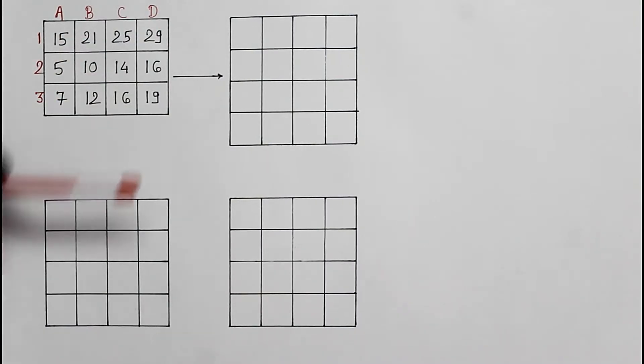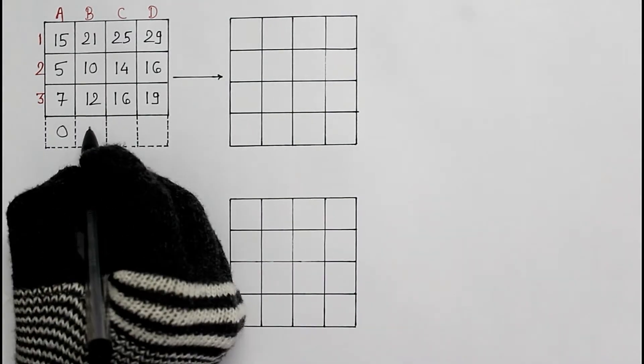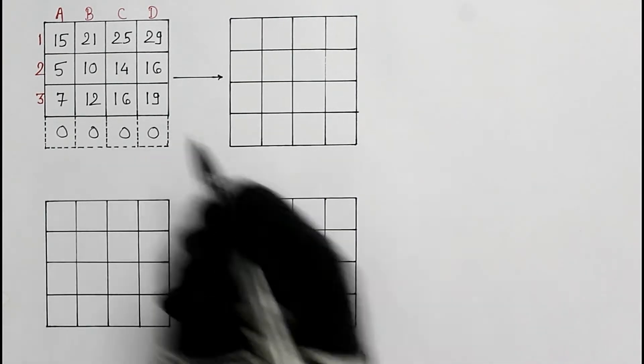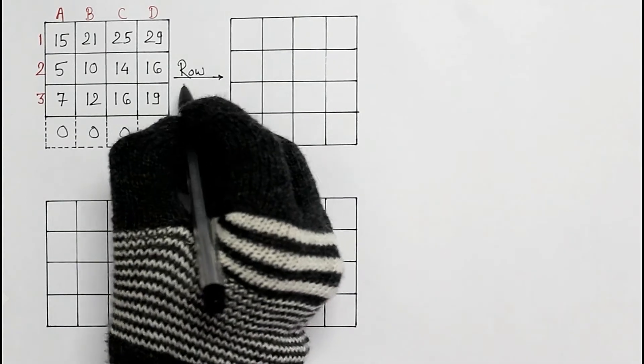So we must add a dummy row to form a square matrix. All the elements are zero for a dummy row. Now we can apply the Hungarian method, and the rest of the procedure is the same.